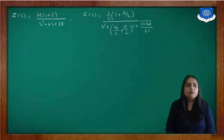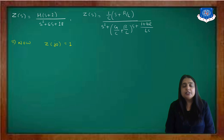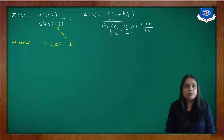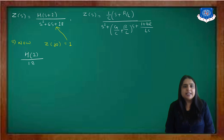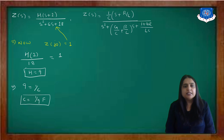We now have two expressions for Z(s): one from the pole-zero diagram and one from the circuit. Using the condition Z(j0)=1, we substitute s=0: h·2/18 = 1, giving h=9. Comparing the two Z(s) expressions, the coefficient (1/C) corresponds to h=9, so C = 1/9 Farad.